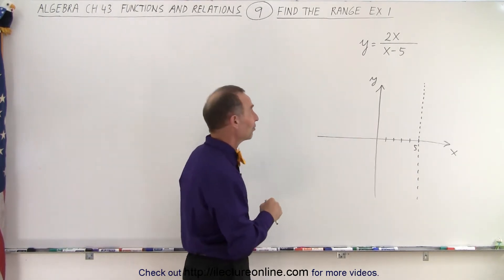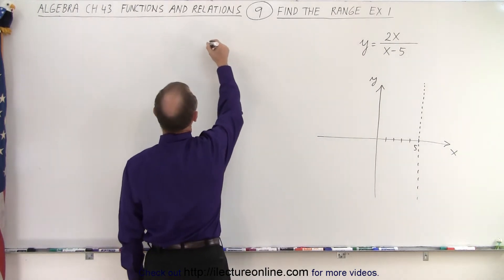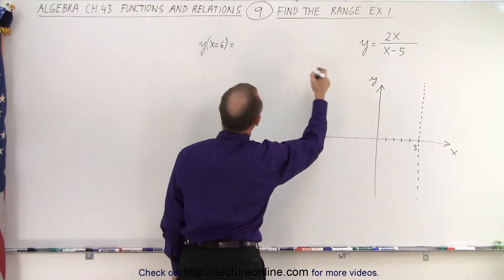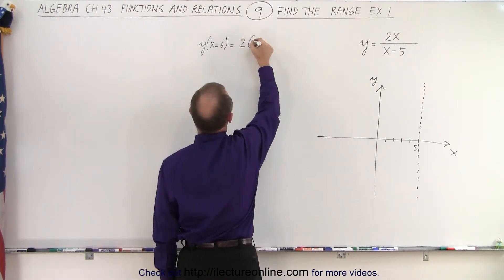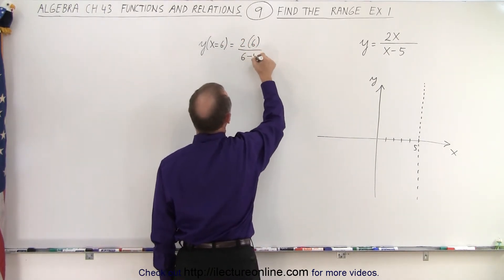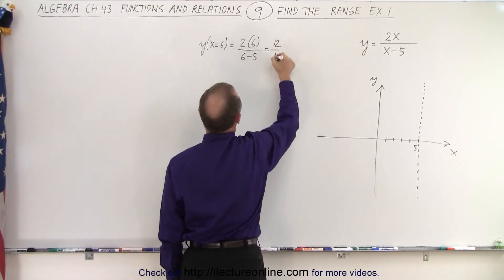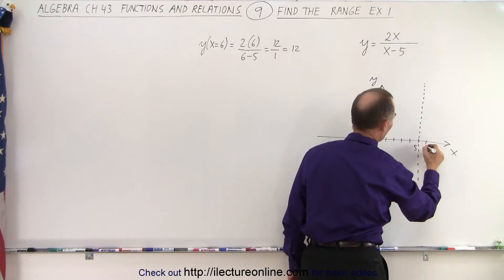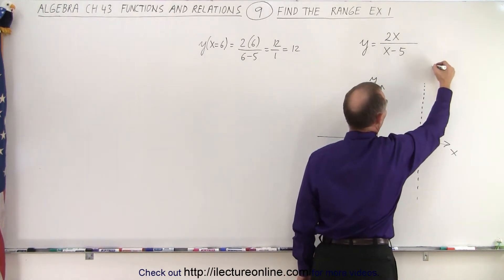So what we're going to do now is we're going to find a point to the left and to the right of that vertical asymptote. So we're going to find the value for y when x equals 6. When we do that, we put in 2 times 6 divided by 6 minus 5, which is 12 over 1, which is 12, which means when x equals 6, y is equal to 12, which is up here somewhere.